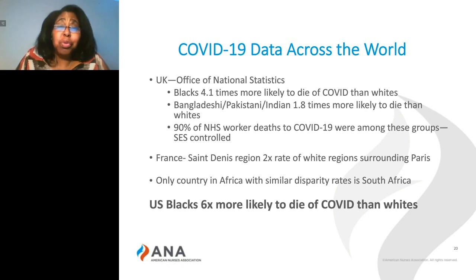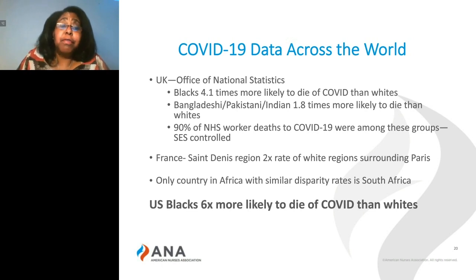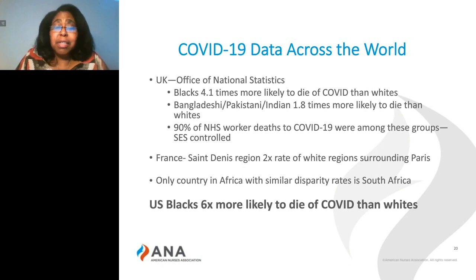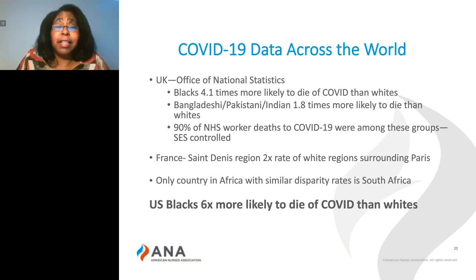This is actually controlling for socioeconomic factors, recognizing that socioeconomics don't play a role in COVID risks or risk of death. In France, the Saint-Denis region surrounding Paris has twice the rate of COVID deaths than the white regions surrounding the city. The only country in Africa with a similar disparity rate is South Africa. And while we see a four times rate in some countries, U.S. Blacks have almost a six times greater likelihood of dying from COVID than whites.